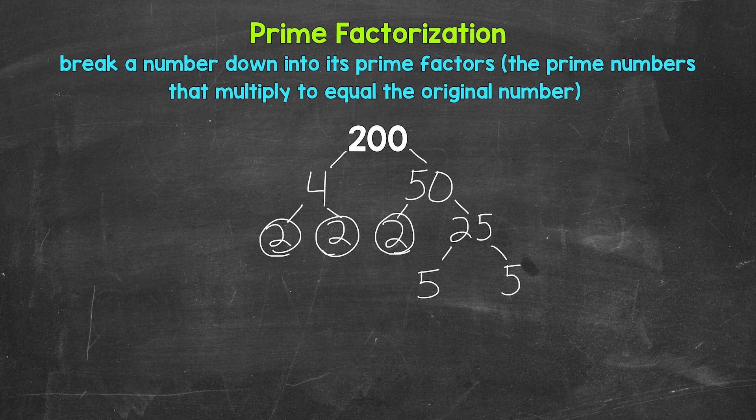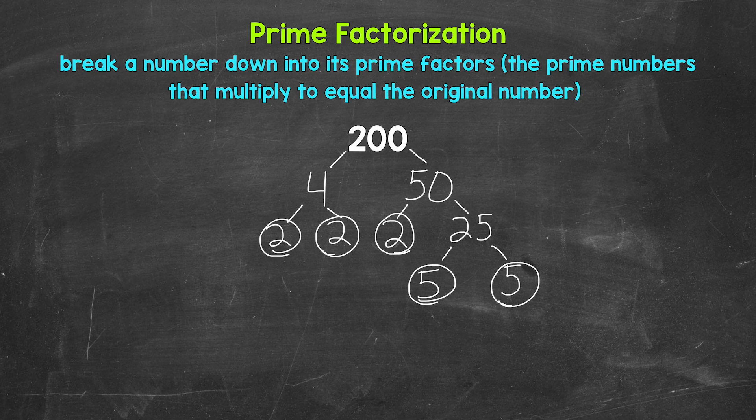Now 5 is a prime number, so we are done here and here. And that's it. That's the prime factorization of 200. We don't have anything else that we can break down any further. We have all prime numbers. So let's write this out as 200 equals, and then we can write out our prime factors in order from least to greatest.